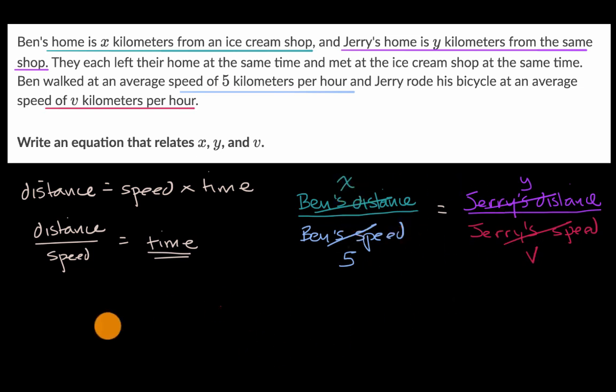And so we could rewrite all of this as X over five is equal to Y over V. And once again, the way that I've set this up, the left side is the amount of time Ben takes to get to the ice cream shop. This is on the right-hand side. This is the amount of time Jerry takes to get to the ice cream shop. And they tell us it's the same amount of time.